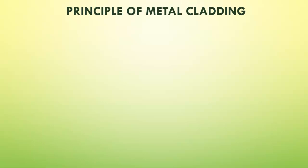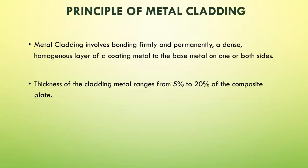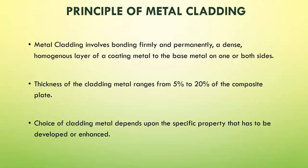What is the principle of metal cladding? Metal cladding involves bonding firmly and permanently a dense, homogenous layer of coating metal to the base metal on one or both sides. The thickness of the cladding metal ranges from 5% to 20% of the composite plate, and the choice of cladding metal depends upon the specific property that has to be developed or enhanced.